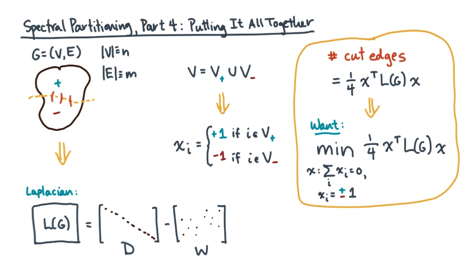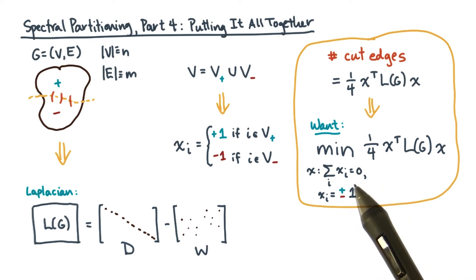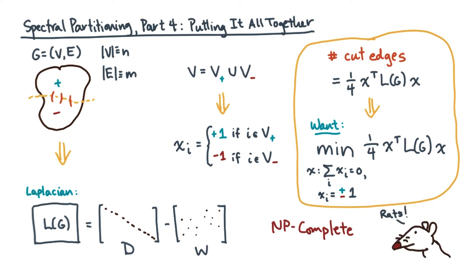First, you want to assign every vertex to one partition or the other, and you want the same number of vertices in each partition. This problem is unfortunately NP complete. So to work around that, let's relax the problem a little.